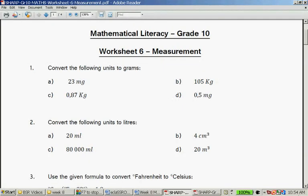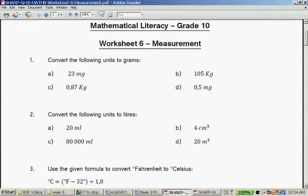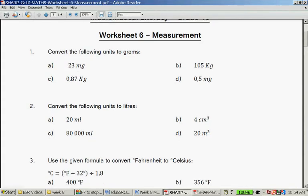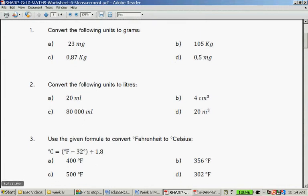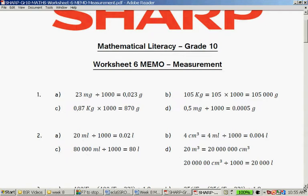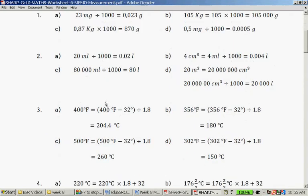Question three. Use the given formula to convert Fahrenheit to degrees Celsius. Now we have a formula and this will be given to you in a test. If you want degrees Celsius, you pop the Fahrenheit into there. So you take the amount minus 32 divided by 1.8. So it's 400 minus 32 gives you 368 divided by 1.8. Let's look at the answer. 400 minus 32 divided by 1.8 is 204.4 degrees Celsius.